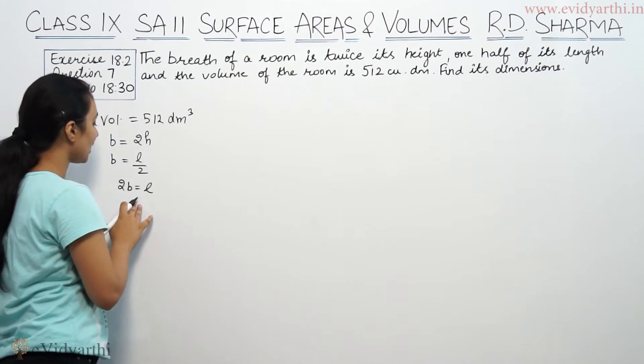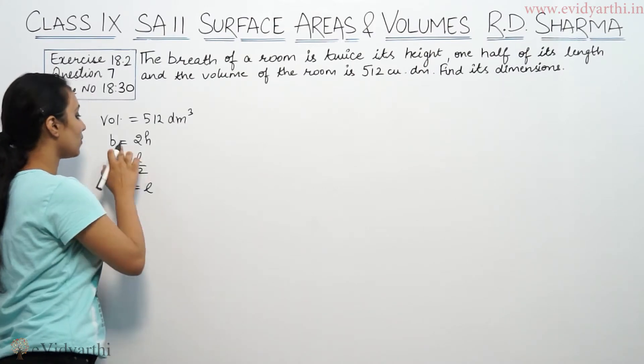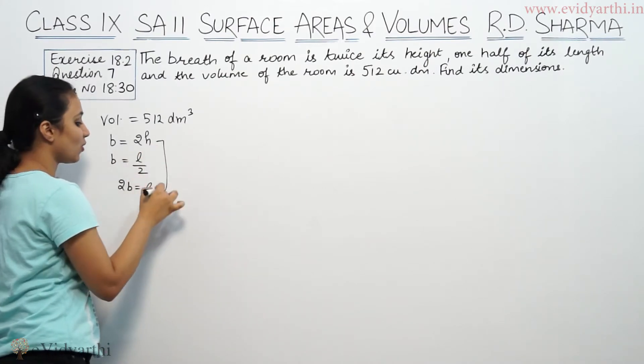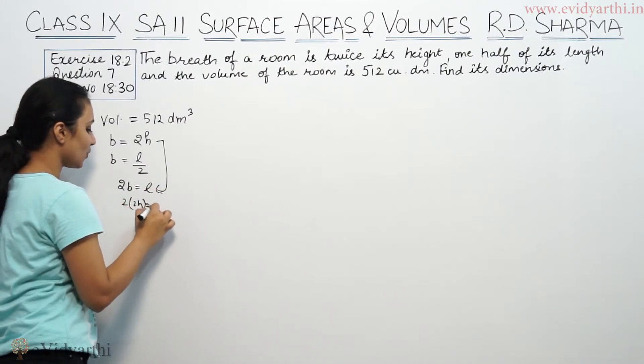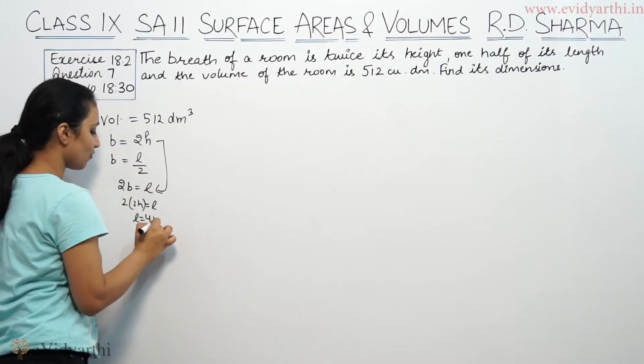Now we have length equal to 2b and b value is 2h. So 2h is equal to b. So L is basically 4h.